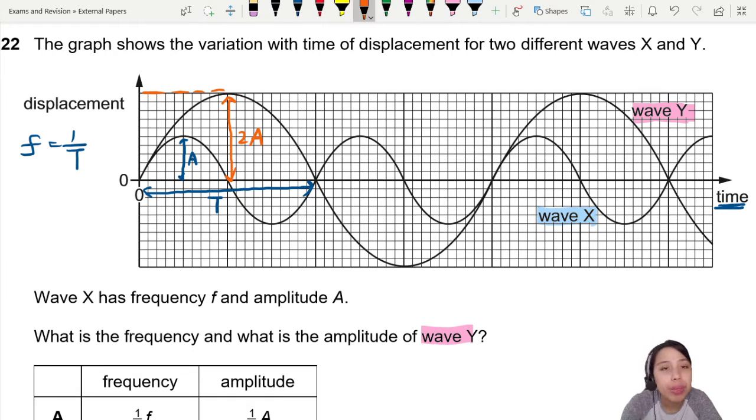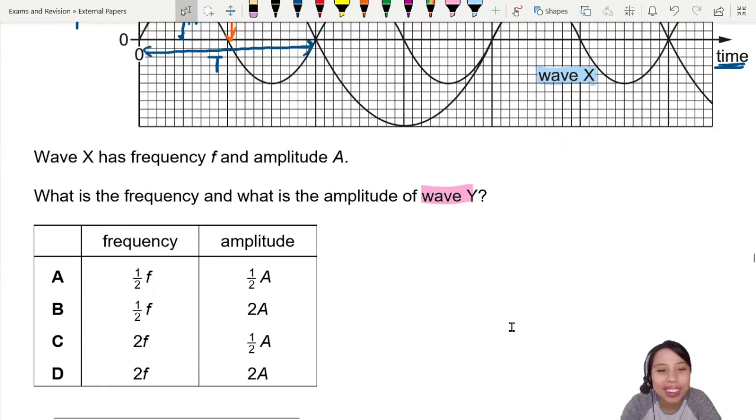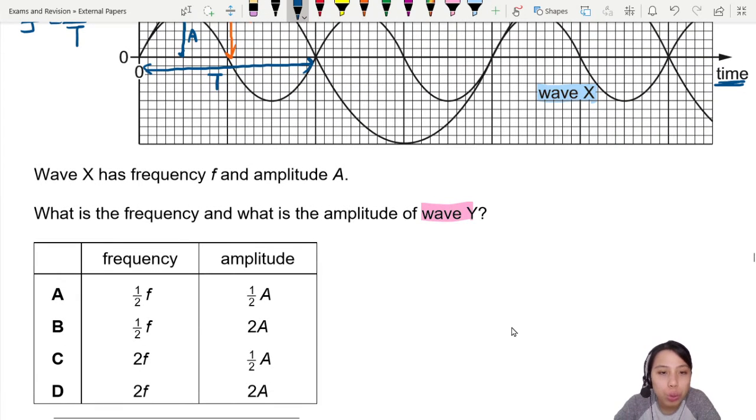Maybe you should go and check the answer. See all A, 2A, A, 2A. So 2A is correct. 2A, 2A. If you want to wrong, wrong. So we can already cancel out A, cancel out C.